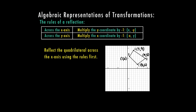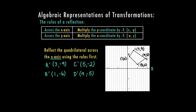Reflecting across the x-axis means the y coordinate multiplies by negative 1. So A prime stays at x = 3, and 9 times negative 1 gives -9. B prime: x stays 1, positive 6 becomes -6. C prime: x stays 5, y becomes -2. D prime: x stays 9, y multiplies by negative 1. Now we have our new points and we go ahead and plot those.